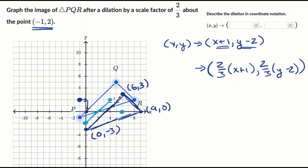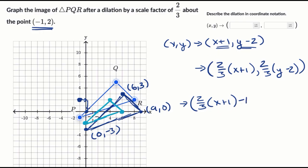Our triangle has now been dilated about the origin. The last thing we want to do is shift back so that the origin goes back to negative one comma two — we just undo the first transformation. So that last step: starting with two thirds times x plus one, I subtract that one to shift back to the left. And for the y coordinate, two thirds times y minus two, I shift it back up by two. So each of these points shifts to the left by one and up by two.